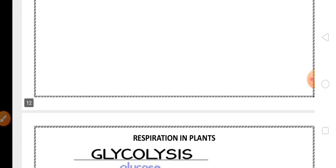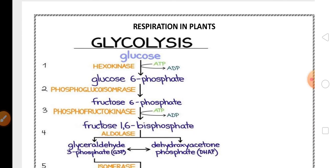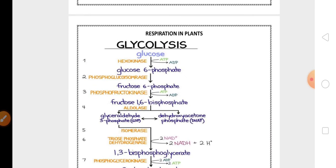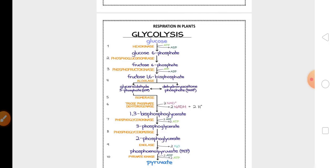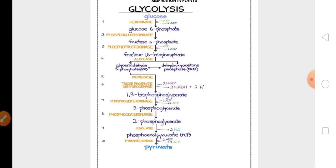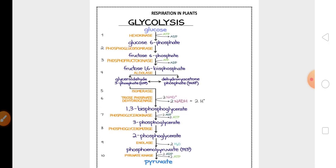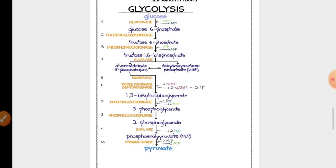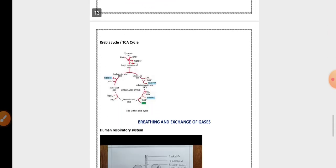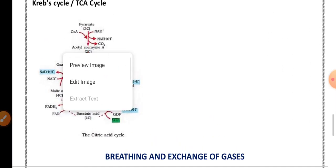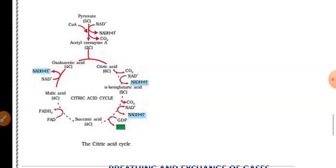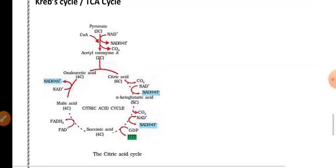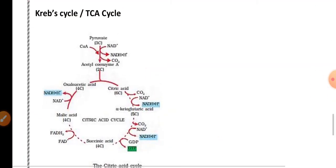From Respiration in Plants, a compulsory question for the exam is the glycolysis pathway or the Krebs cycle — any one of them is very very important for five marks. This is a representation of the glycolysis pathway, which includes ten steps. They may also ask you to draw the Krebs cycle, also called the TCA cycle or citric acid cycle, which is also very important.